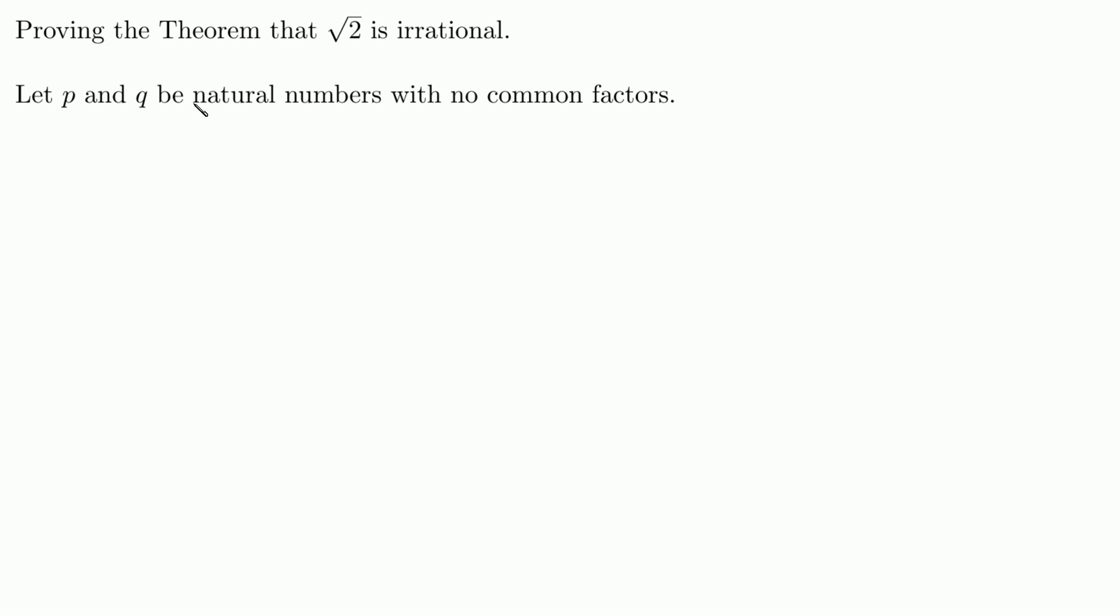Let p and q be natural numbers with no common factors. Then if the square root of 2 is indeed a rational number, we should find a representation that is a fraction of two natural numbers p and q. This is the very definition of a rational number.